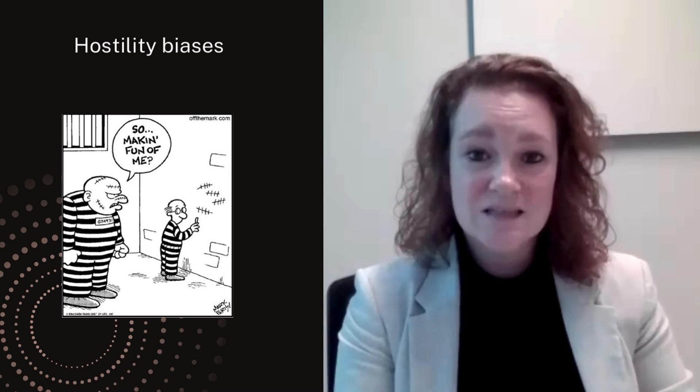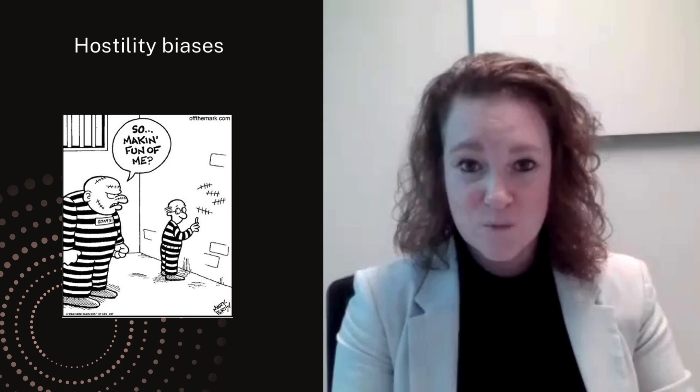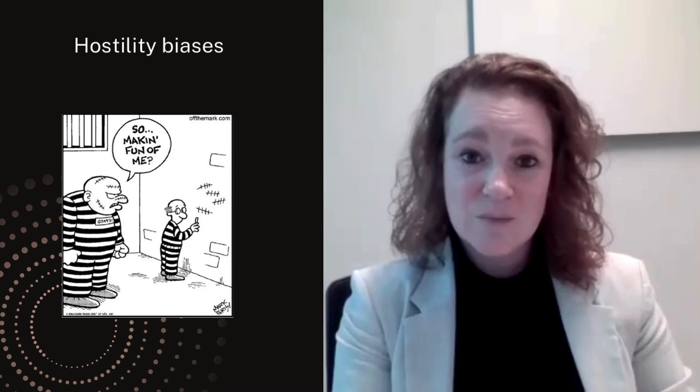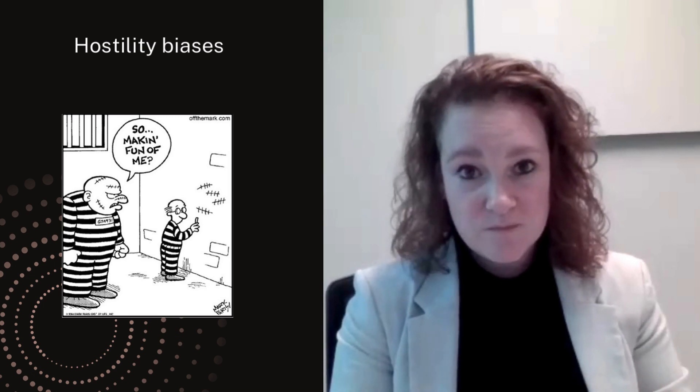Hostility biases refer to the tendency to perceive social information as hostile. Within the literature, four types of hostility biases have been distinguished, and the first part of our paper consisted of a literature review on these hostility biases across all age groups. The findings showed a positive and robust association between hostility biases and aggressive behavior in children, adolescents, and adults. Based on our findings, and in line with previous literature, we assume that hostility biases are a key characteristic of severe aggressive behavior.